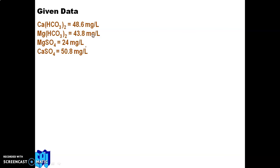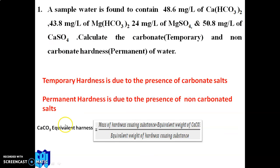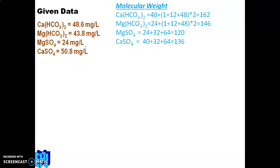When this type of question is asked, you must follow a proper procedure. Keep the main equation in mind: CaCO₃ equivalent hardness = mass of hardness-causing substance × equivalent weight of CaCO₃ ÷ equivalent weight of hardness-causing substance. First, let us find the equivalent weights.